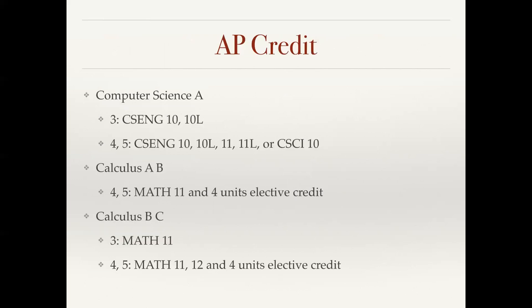We do accept AP classes for credit. If you take computer science A and get a 3, then the computer science and engineering school will give you credit for their first programming class CS10 and the lab. And if you get a 4 or a 5, you would get credit in the engineering school and you'd also get credit for our beginning class CS10. If you take the calculus AB exam and get a 4 or a 5, you get credit for the first quarter of calculus, which is Math 11, and then four units of elective credit. Whereas if you take calculus BC and get a 3, you'd get credit for Math 11. If you earn a 4 or a 5, you'll get credit for our first two quarters of calculus, Math 11 and 12, and then four units of elective credit. We expect these to remain unchanged, even though the AP exams will be covering a subset of the complete material because of the school shutdowns.